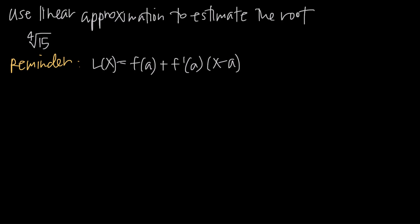In this video, we're talking about how to use linear approximation to estimate a root. In this particular problem, we've been asked to find the fourth root of 15, which is the same as 15 to the one-fourth power. The fourth root of 15 is whatever we have to multiply by itself four times to get 15. That's not going to be a whole number, so without a calculator this would be difficult, but we can use linear approximation to do this on paper.